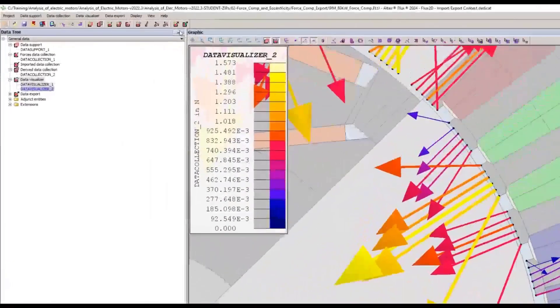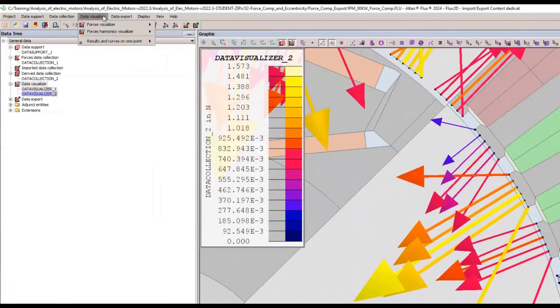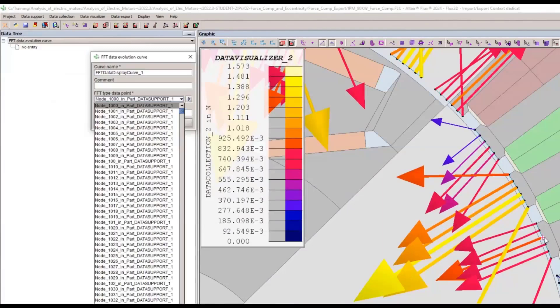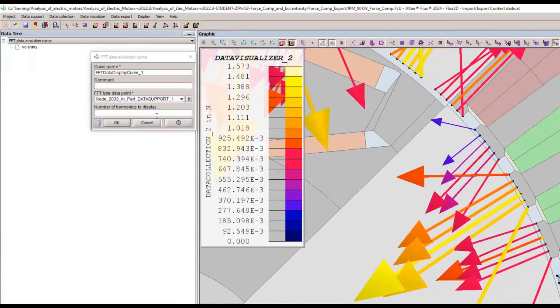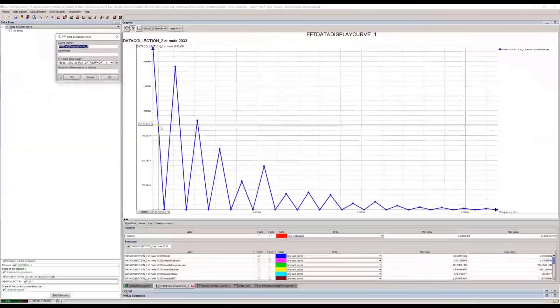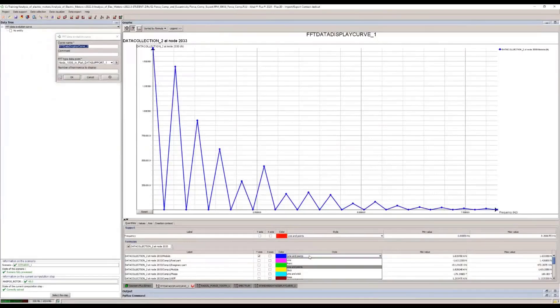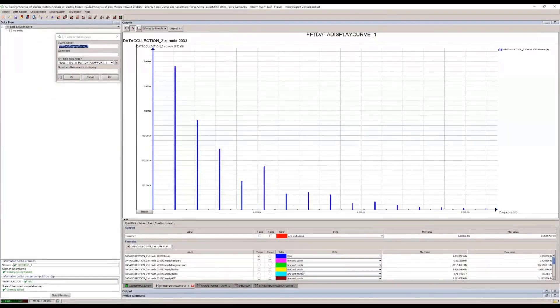And then, of course, if you want to see the complete harmonic content of one force, we can select one of the nodes and export the FFT or plot the FFT curve of this particular node force. So here we choose the maximum number of harmonics, 64. And there we have the FFT component of that particular nodal force. So that's the excitation that will be sent to OptiStruct.